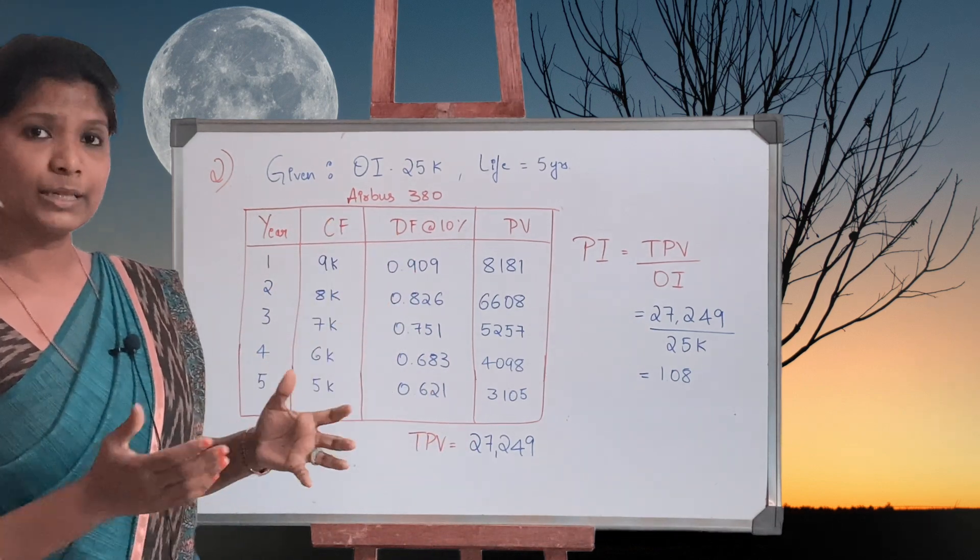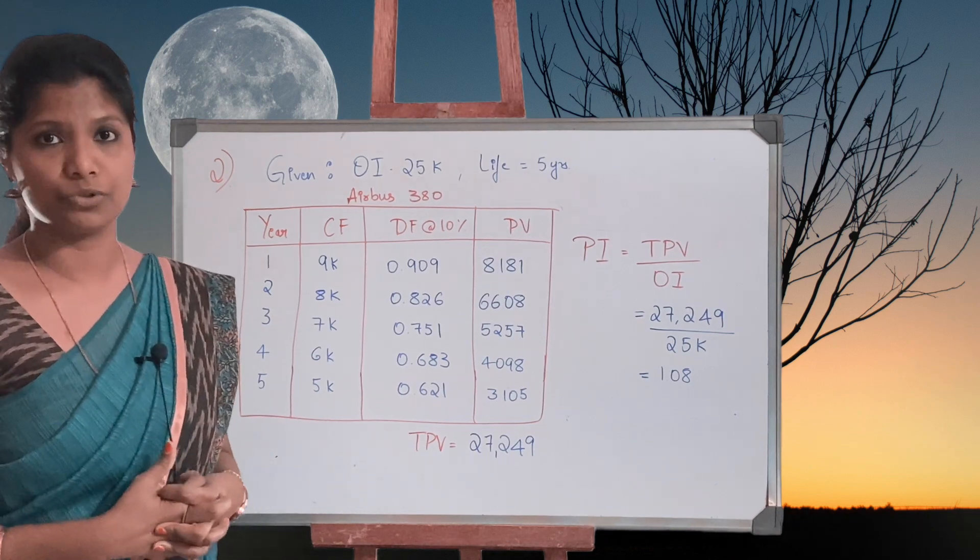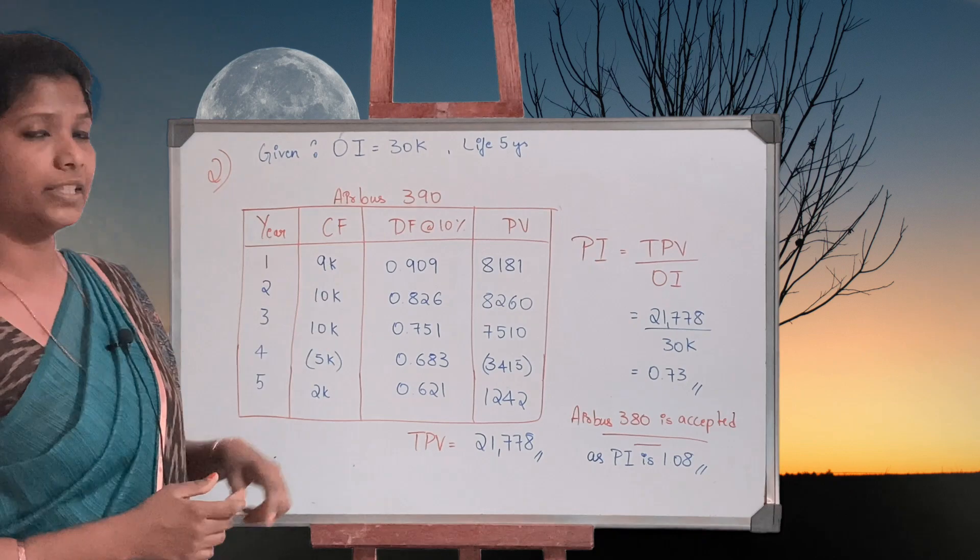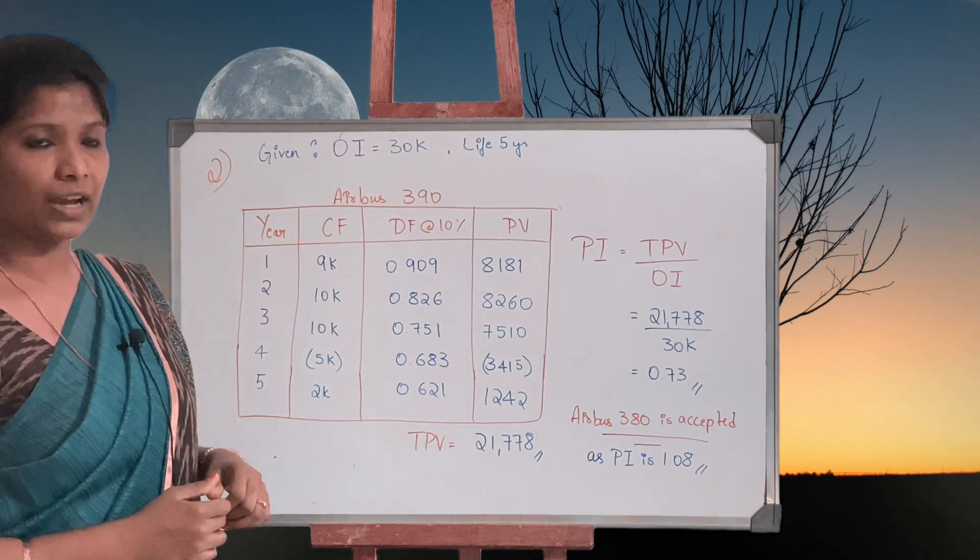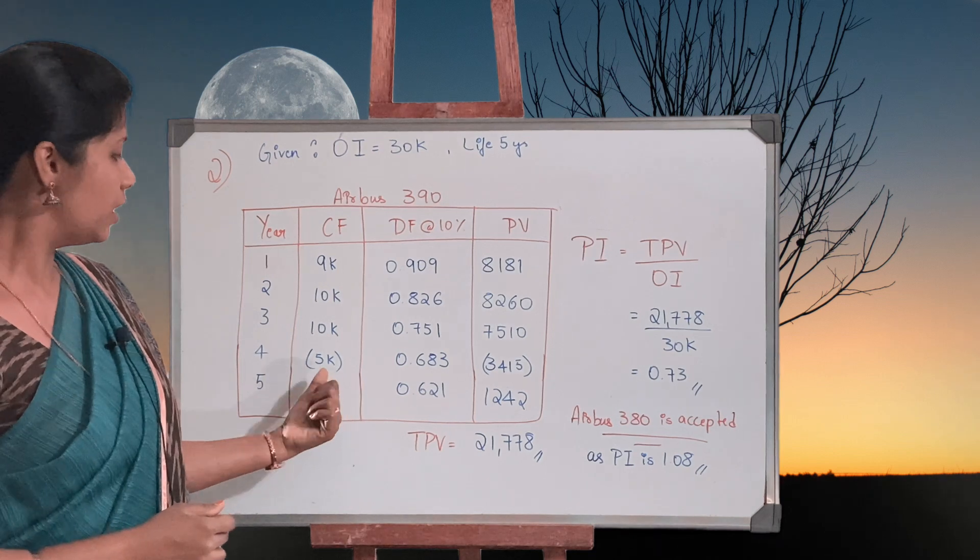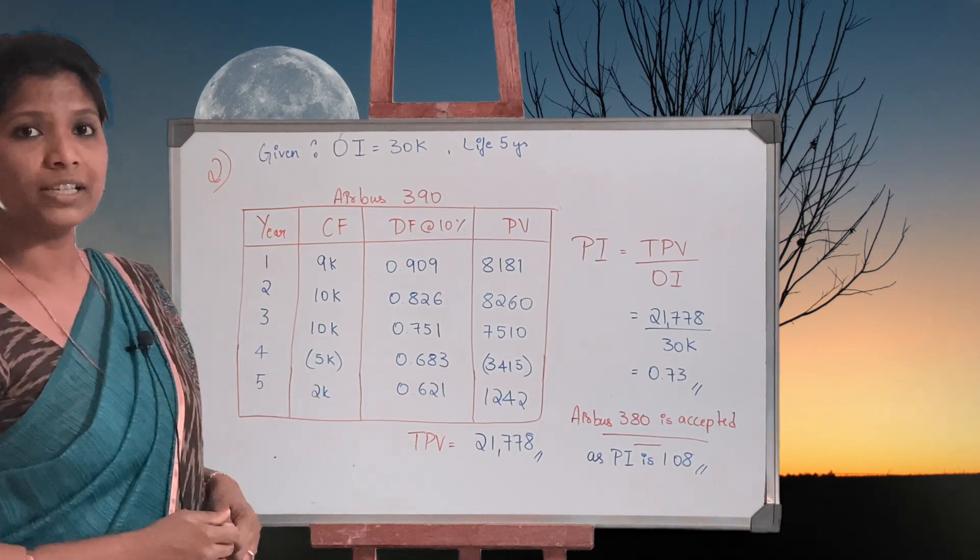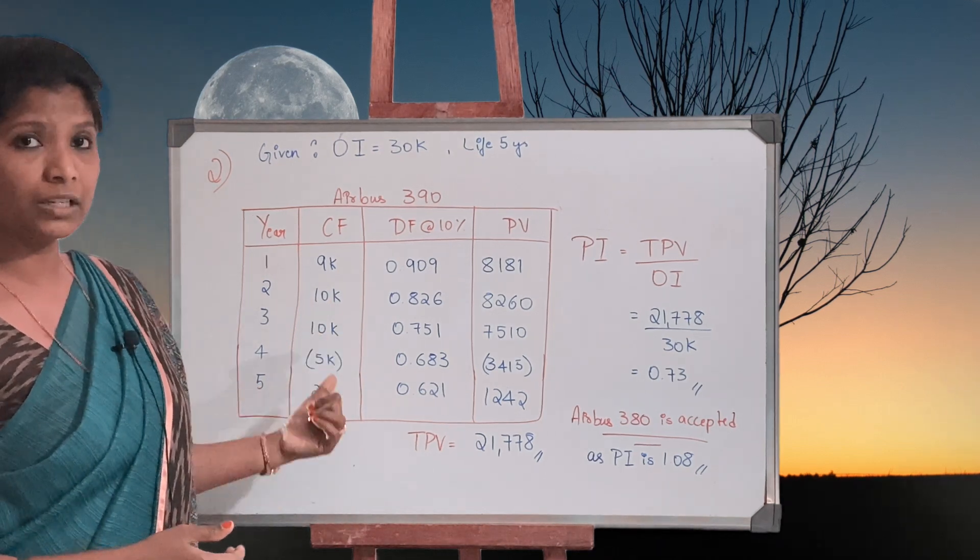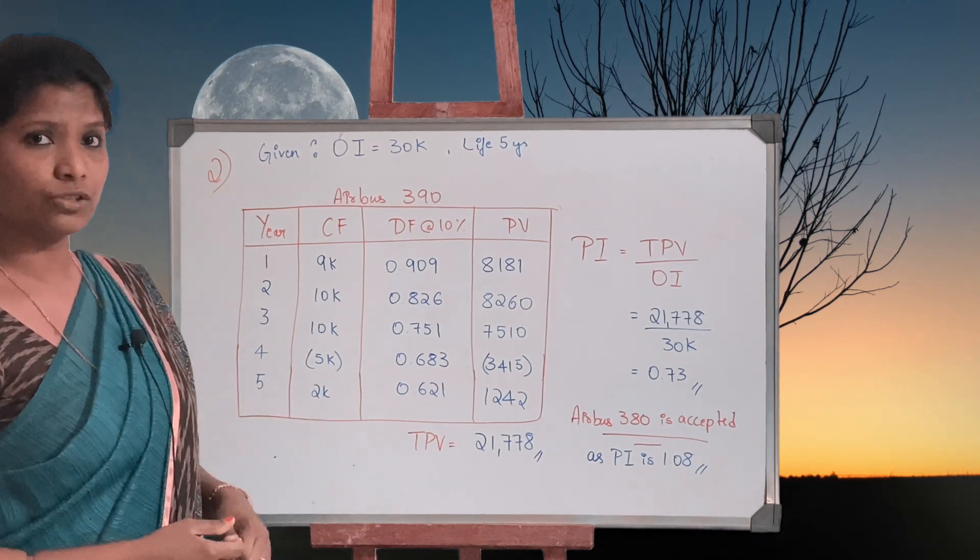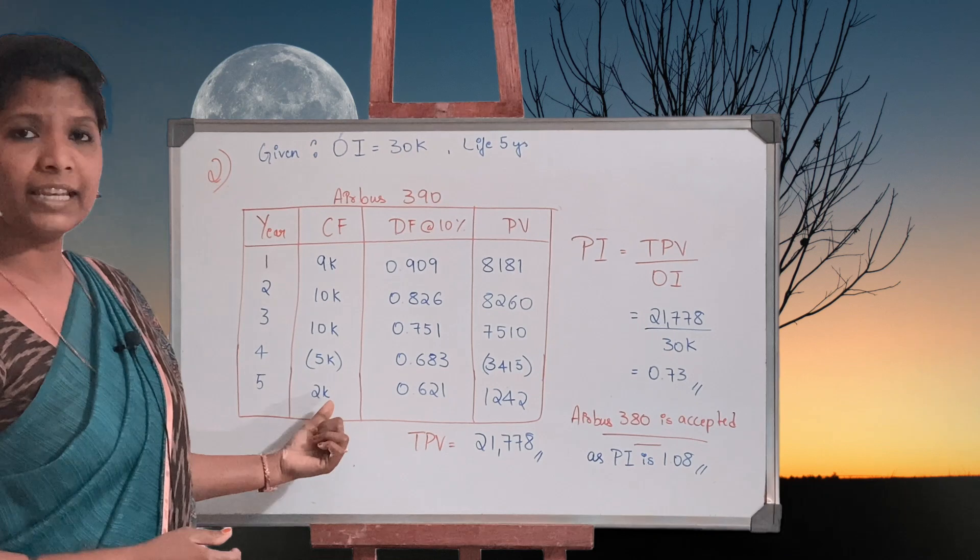Now just by looking at this answer, we cannot comment whether or not Airbus 380 must be accepted. Let's solve the other machine. The second machine, Airbus 390, original investment is 30,000 and the life of the asset is five years. If you can observe, one of the year cash flows is a loss - the company will incur a 5,000 rupees loss in the fourth year, and then next year they are earning 2,000 rupees of profit.